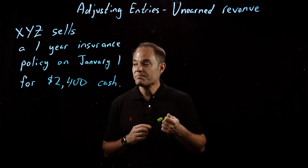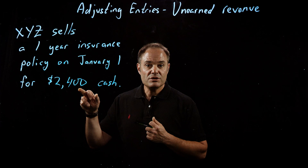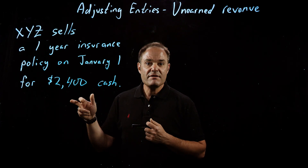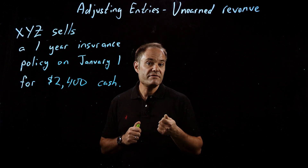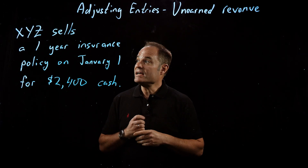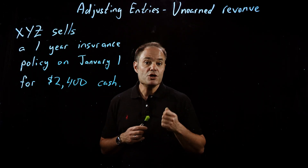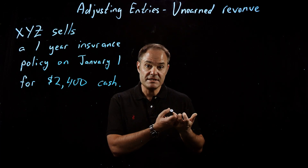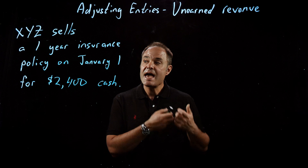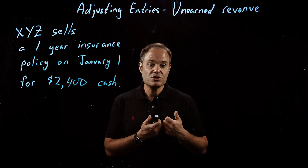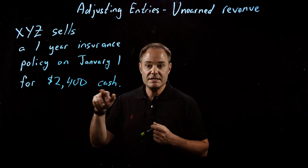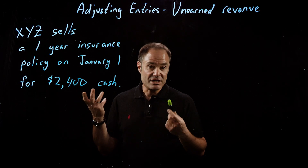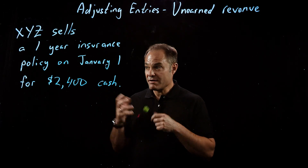Now remember, they're going to receive $2,400 of cash on January 1st, but we can't record that as revenue because in order to have revenue, two things have to occur. In the case of an insurance policy, you have to substantially complete the delivery of the policy or provide the service, and payment has to be reasonably assured. While payment is reasonably assured — they've already been paid on January 1st — they haven't delivered anything on that date yet, so they don't have revenue.